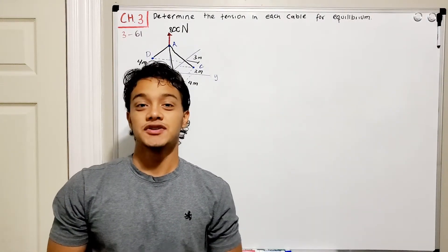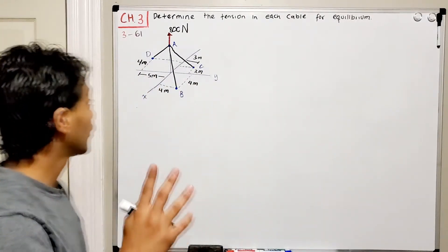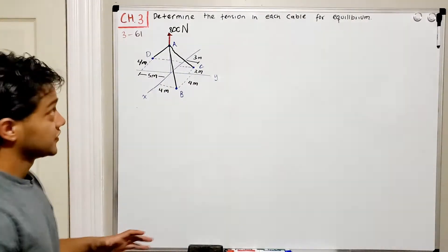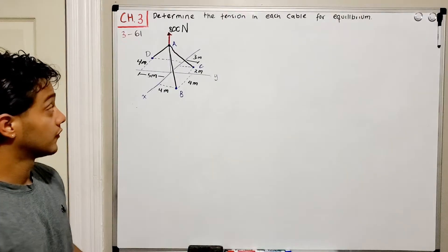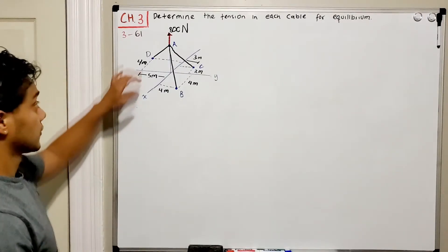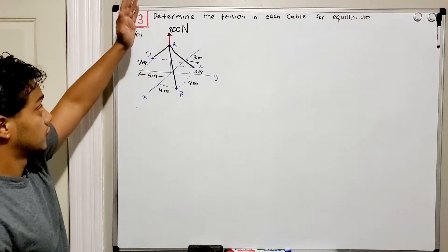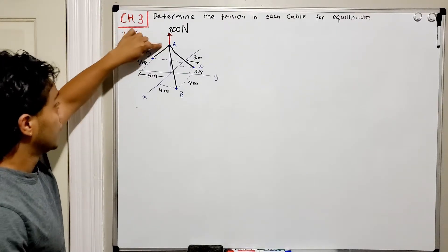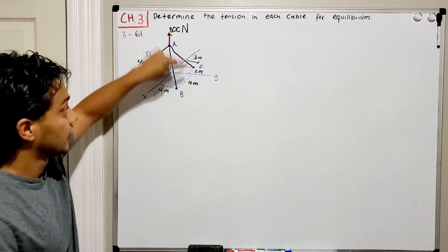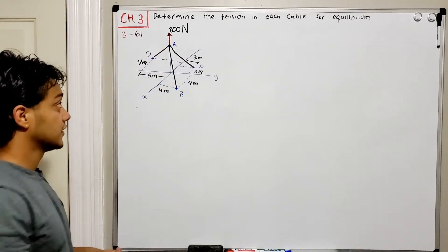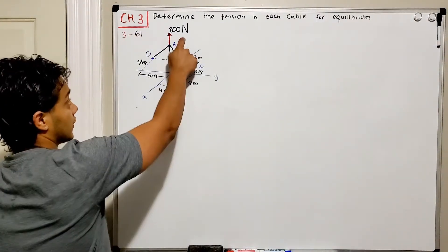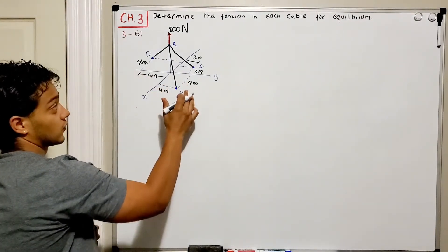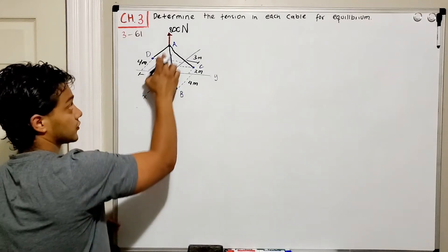Welcome back everyone to Learning by Teaching. We're in statics and we're going to do problem 3.61 of the book. It says determine the tension in each cable for equilibrium. We have a force of 800 newtons going up, and three cables — AD, AB, and AC — supporting those 800 newtons. To do the forces in equilibrium we need to find the unit vectors for each cable.